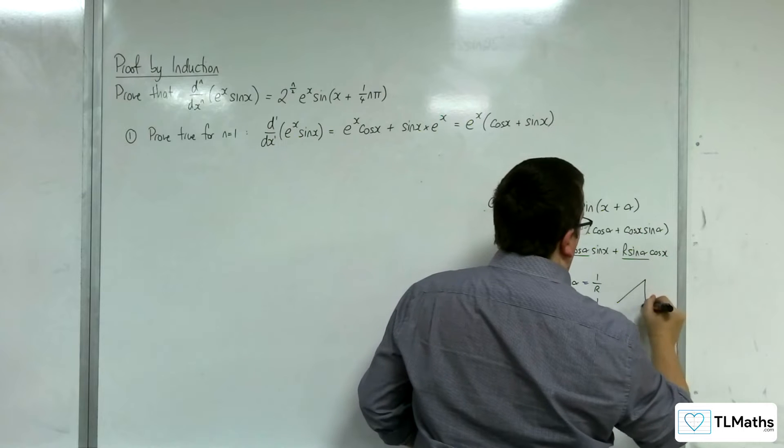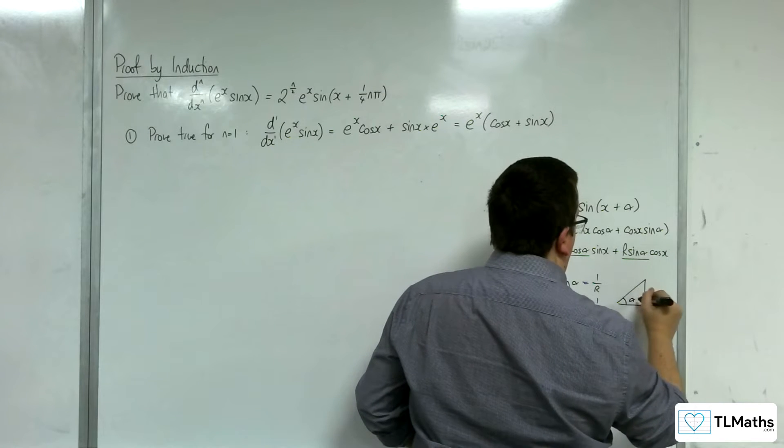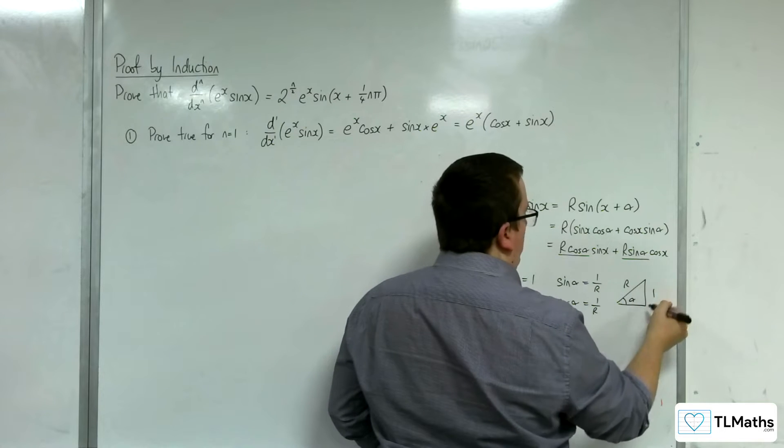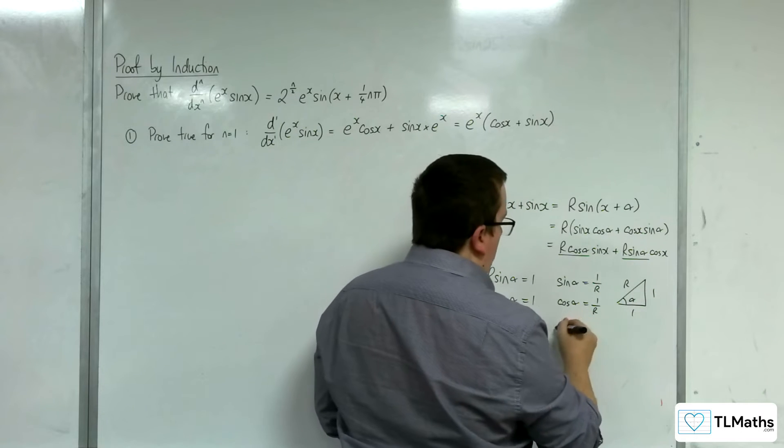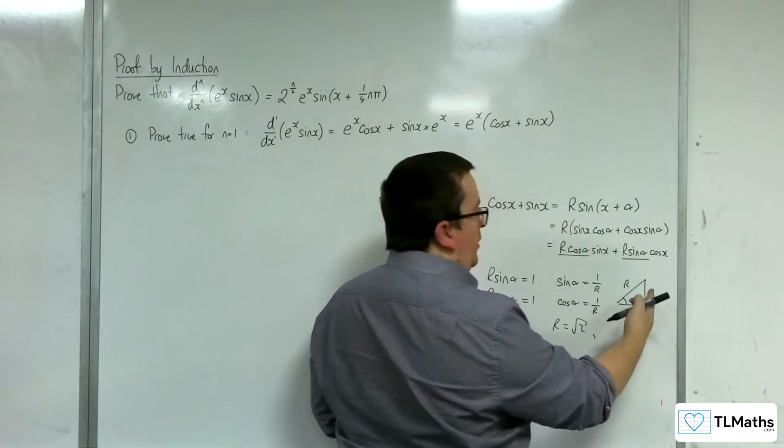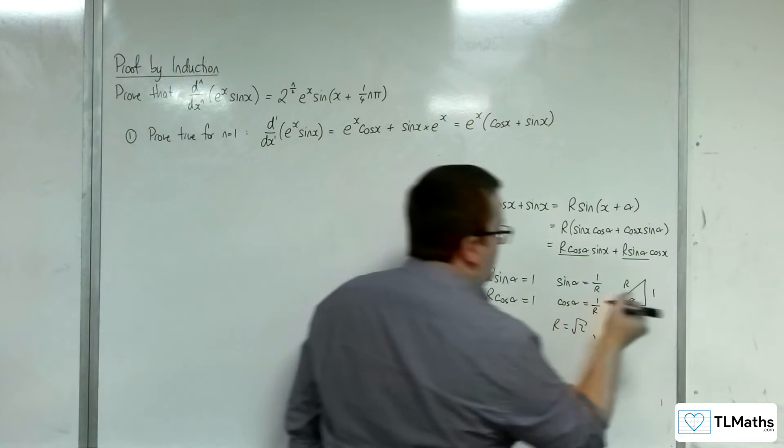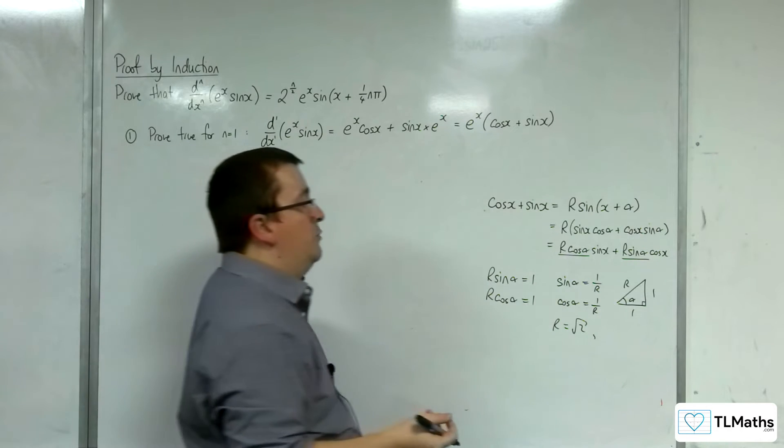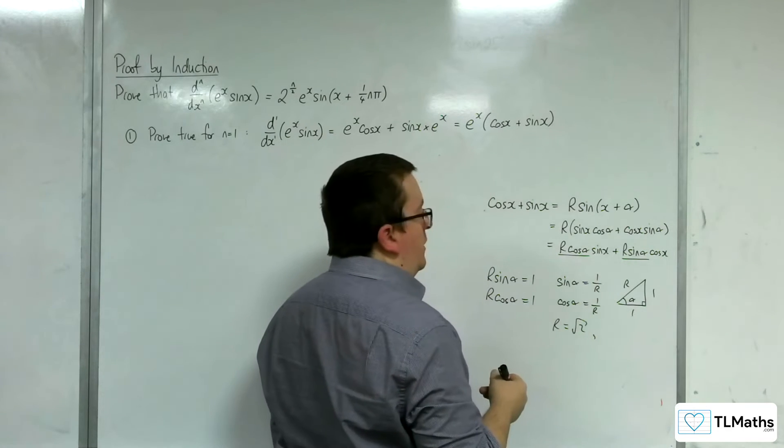So if I drew a right angle triangle for this, there's my alpha, there's my r. The opposite is 1, the adjacent is 1. So that means that r is root 2. And because it's an isosceles right angle triangle, alpha will have to be 45 degrees or pi over 4.